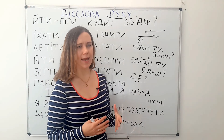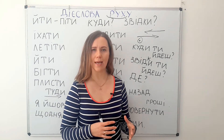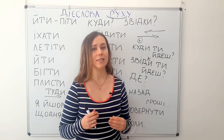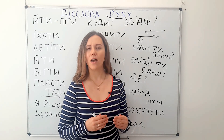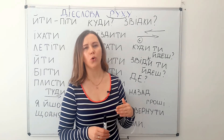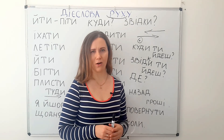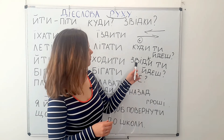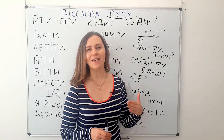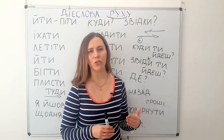DE in Ukrainian means 'where,' and with the help of it we ask only about the location or place of something or someone. Example: 'Where are you now?' — Де ти зараз? — 'I'm in the hospital' — Я в лікарні. 'Where are you going to?' — Куди ти йдеш? — Я йду в лікарню — I'm going to the hospital. 'Where are you coming from?' — Звідки ти йдеш? — Я йду з лікарні — I'm coming from the hospital.